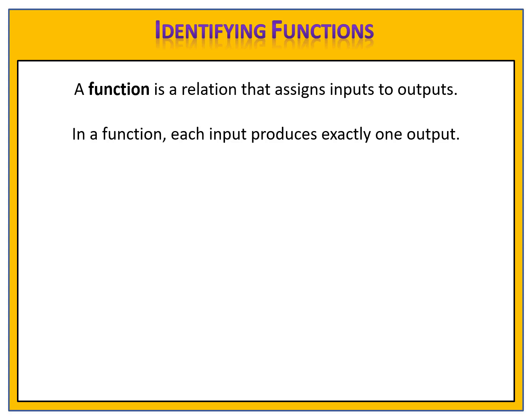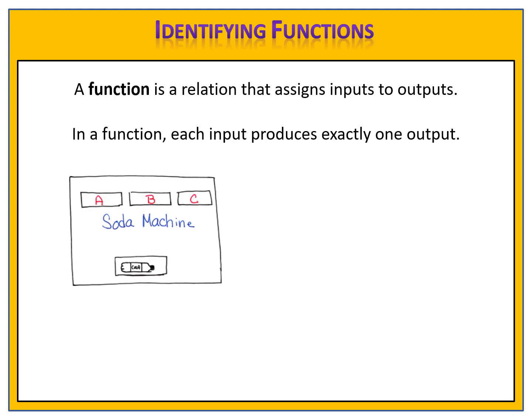In other words, a function is completely predictable. I'd like to think of a soda machine. Suppose we have a soda machine that has three buttons, A, B, and C. The button that you press is the input, and the soda that comes out is the output. In this machine, button A creates the output root beer, button B creates the output ginger ale, and button C creates the output orange soda. When you push any one of those buttons, you know exactly what flavor of soda will come out of the machine.